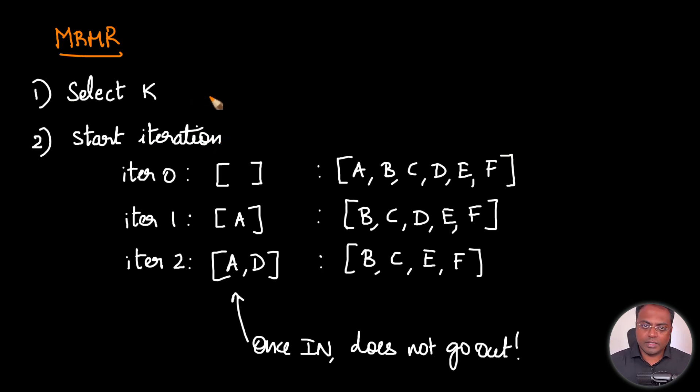How MRMR does the feature selection is as follows. The first step is you need to decide how many features we want to pick. This is an input that we will need to give to MRMR. Once the number of features is selected, we start the iterations.